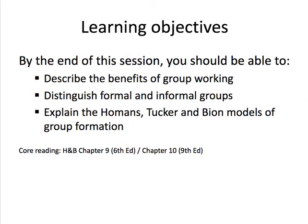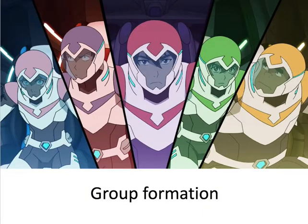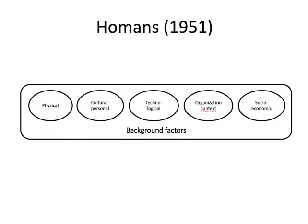So let's think about where we are. We've described the benefits of group working and thought about the distinction between formal and informal groupings. Let's think about how we can explain group formation — how do groups form? Homans, 1951, argues there are a number of elements we need to take account of. He says there's a range of background factors — the physical environment, cultural factors about individuals in the teams, the technologies they have to use, the organisational context, and so on.